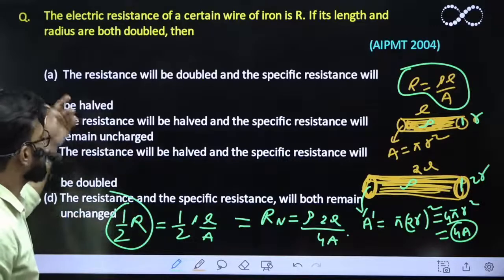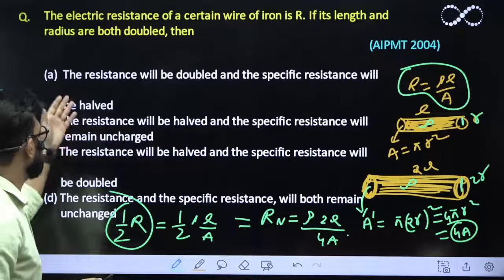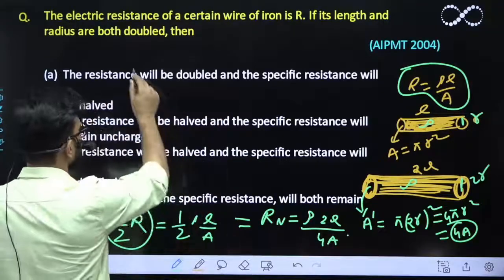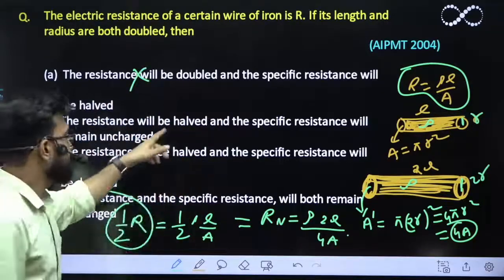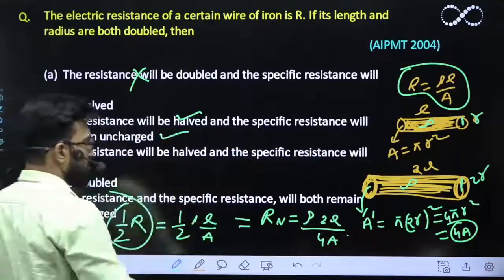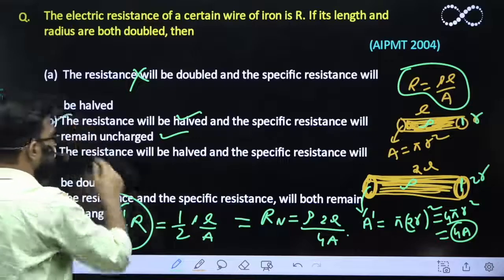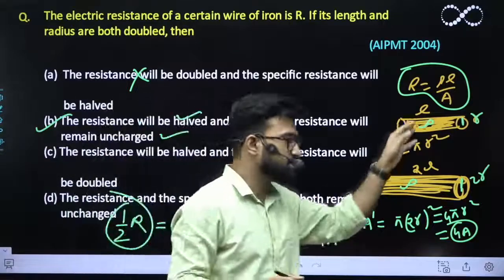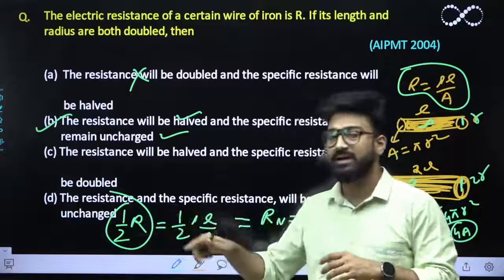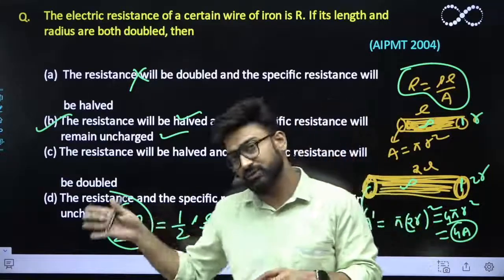So we will be studying about its options. It says resistance will be doubled, which is not true. It says resistance will be halved which is true and specific resistance will remain unchanged. This statement is true because specific resistance, that is also called resistivity, will remain same. Only the resistance comes out to be half times as that of the previous value.